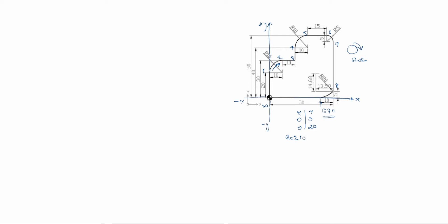X=10, Y=30. For I and J: if you use R, you take 10, but we will use I and J. The arrow goes this way — starting point is here, end point is here, so the arrow touches the Y-axis, meaning J=0. The arrow comes to the X-axis side, which is plus, so I is plus 10. J is 0 because the arrow touches the Y-axis.